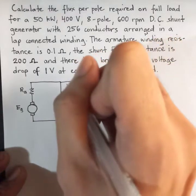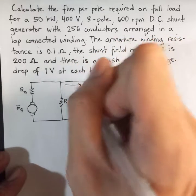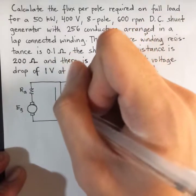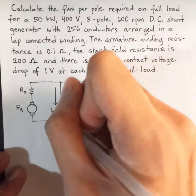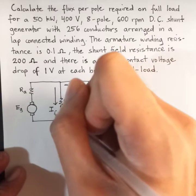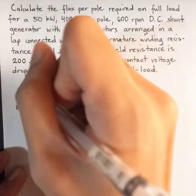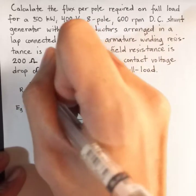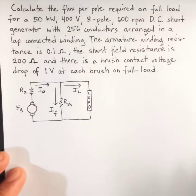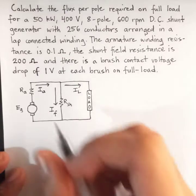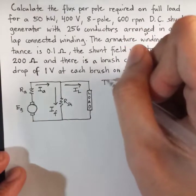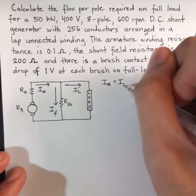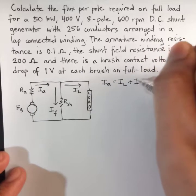Now let's draw the currents, this being the IL, this being the IF, and this being the IA. So, by KCL, IA is equal to IL plus IF.